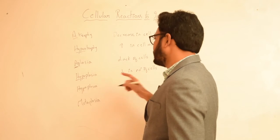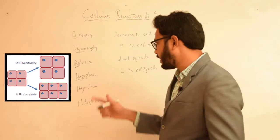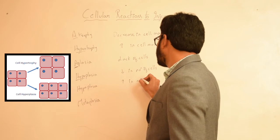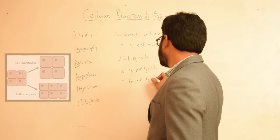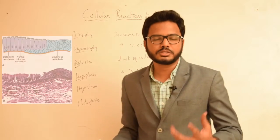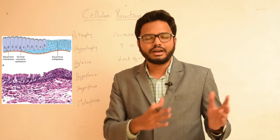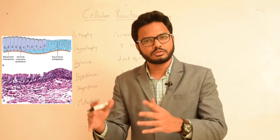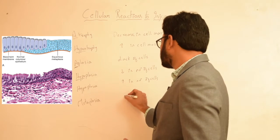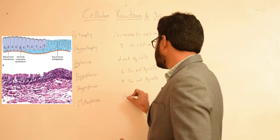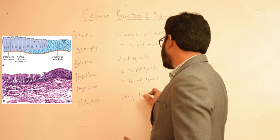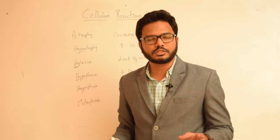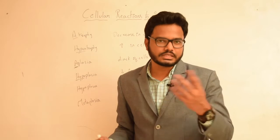Hyperplasia is opposite to hypoplasia — there is an increase in the number of cells. Metaplasia is a reversible phenomenon where one type of differentiated cell changes into another type — it's essentially a change in cell type.